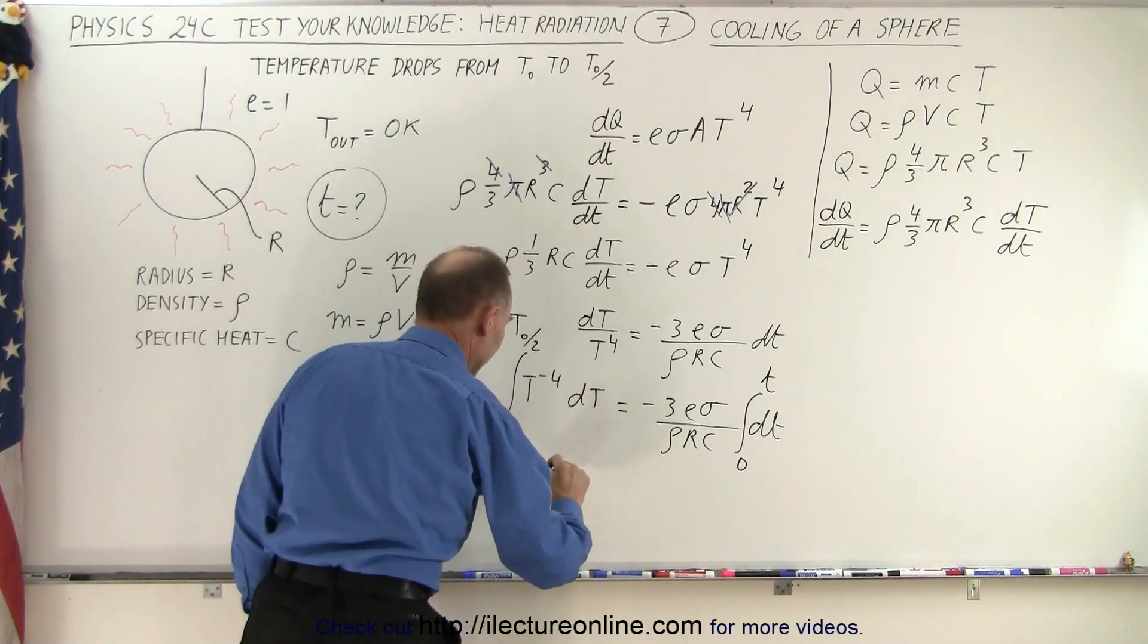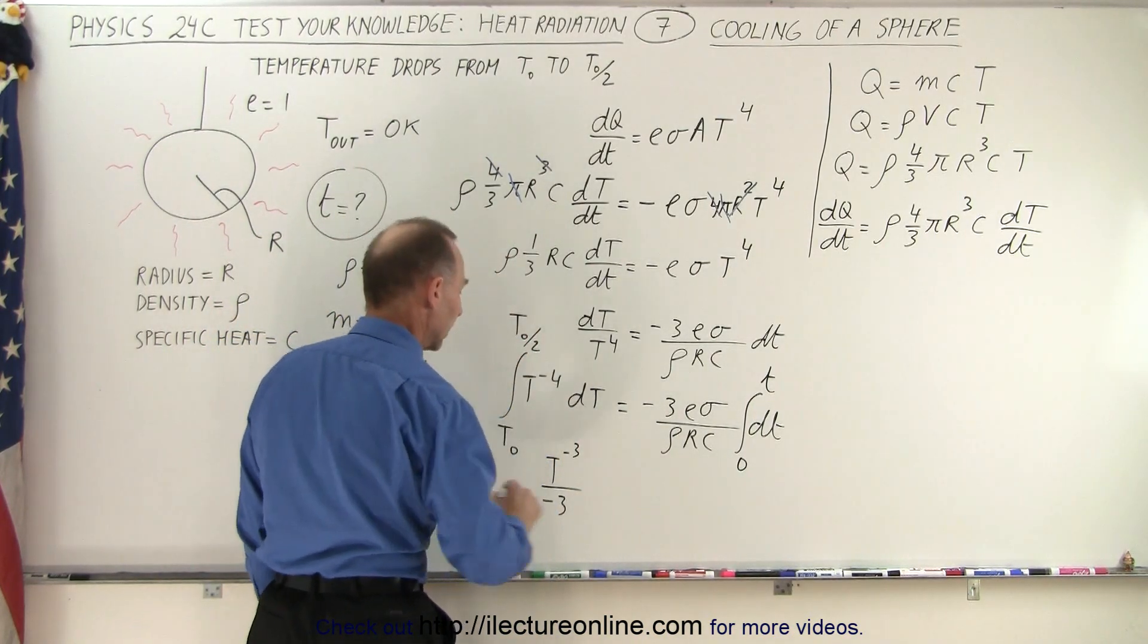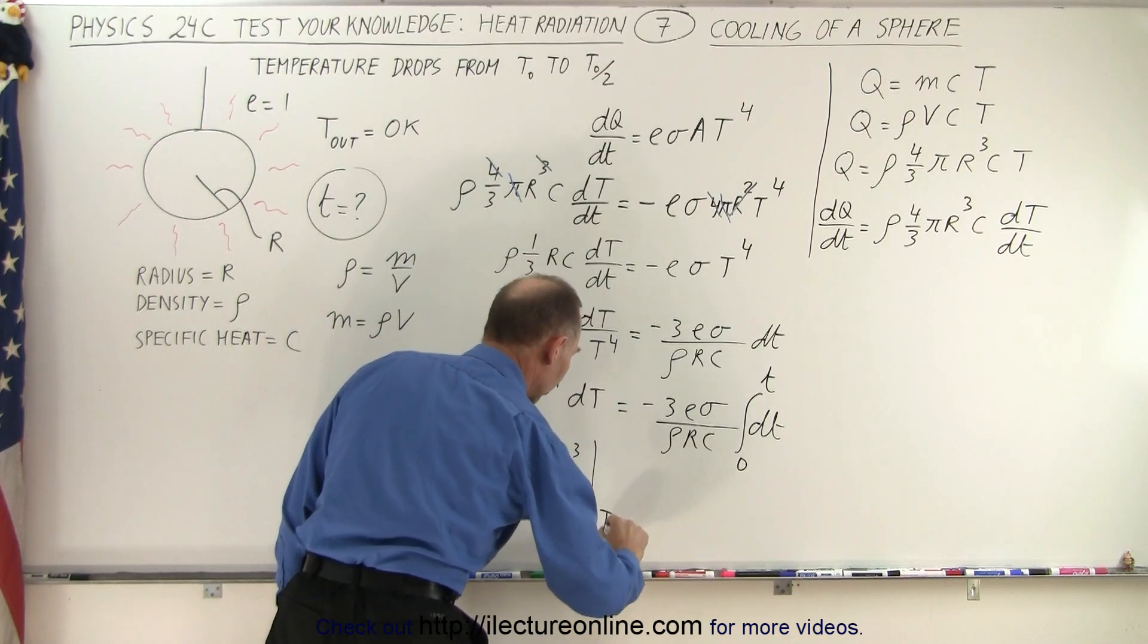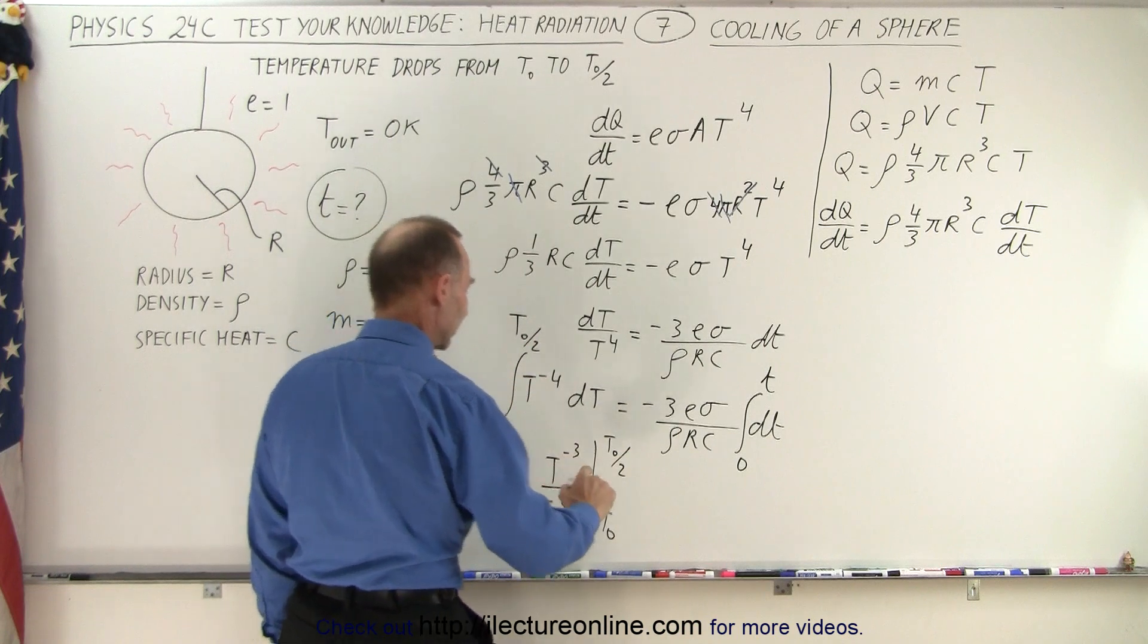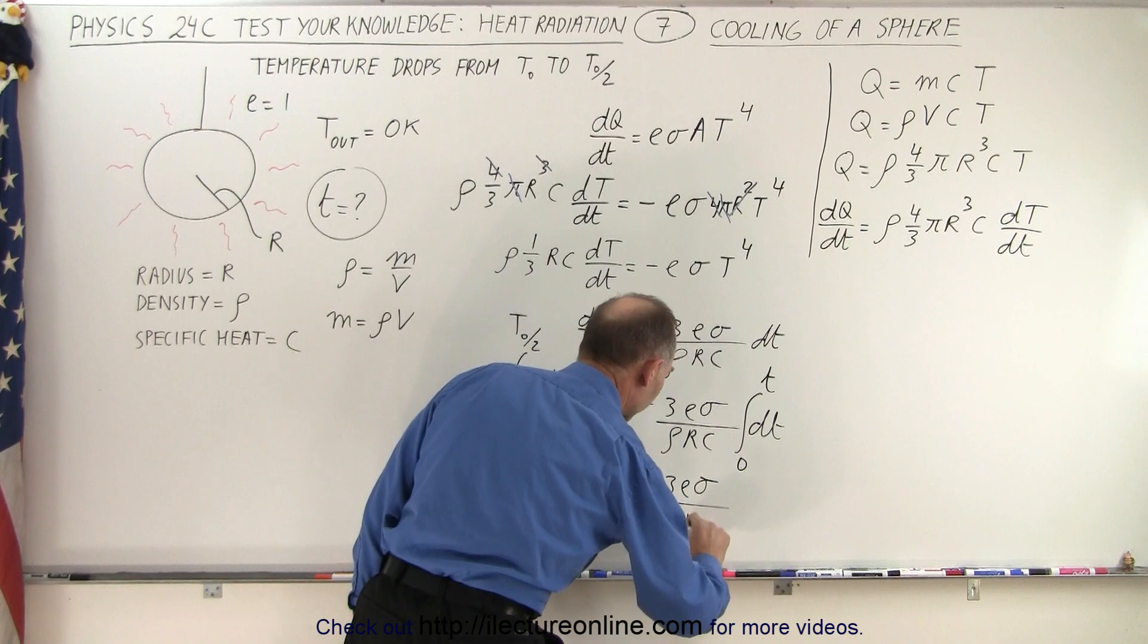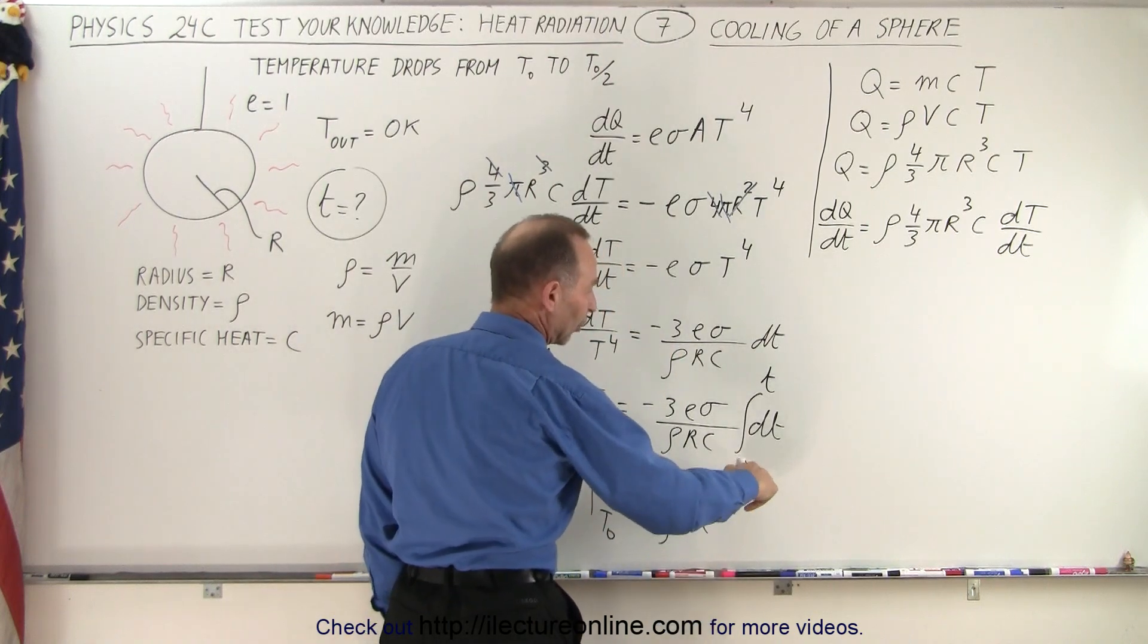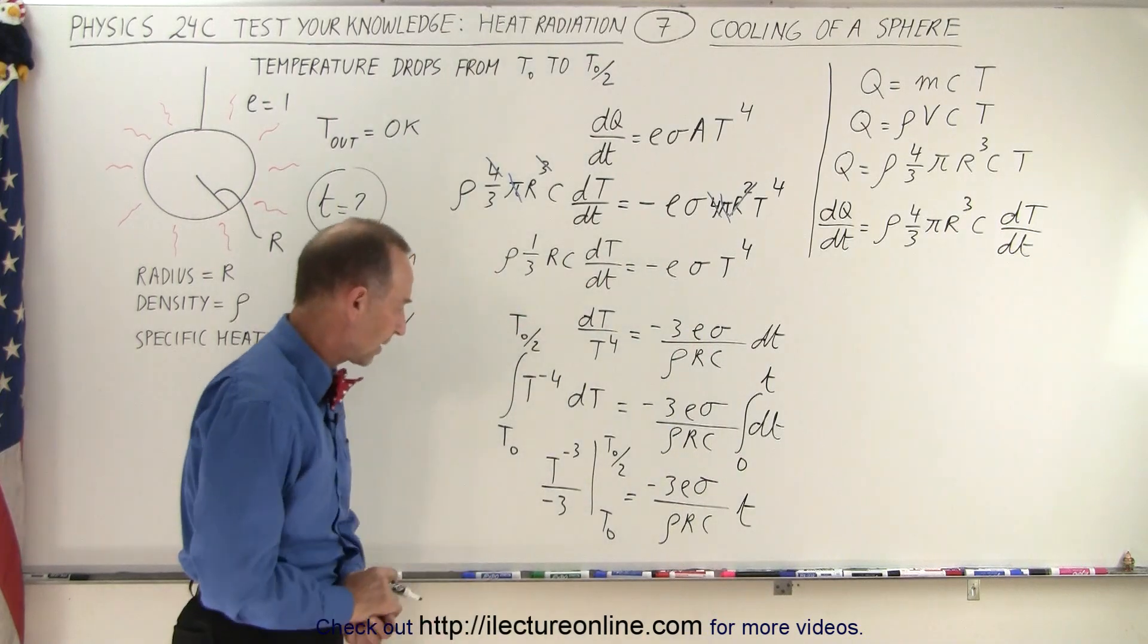When we integrate the left side, we get T⁻³/(-3) evaluated from T initial to T final. And on the right side, we get -3εσ/(ρRC), and of course when we plug in the lower limit we get 0, when we plug in the upper limit we get t.